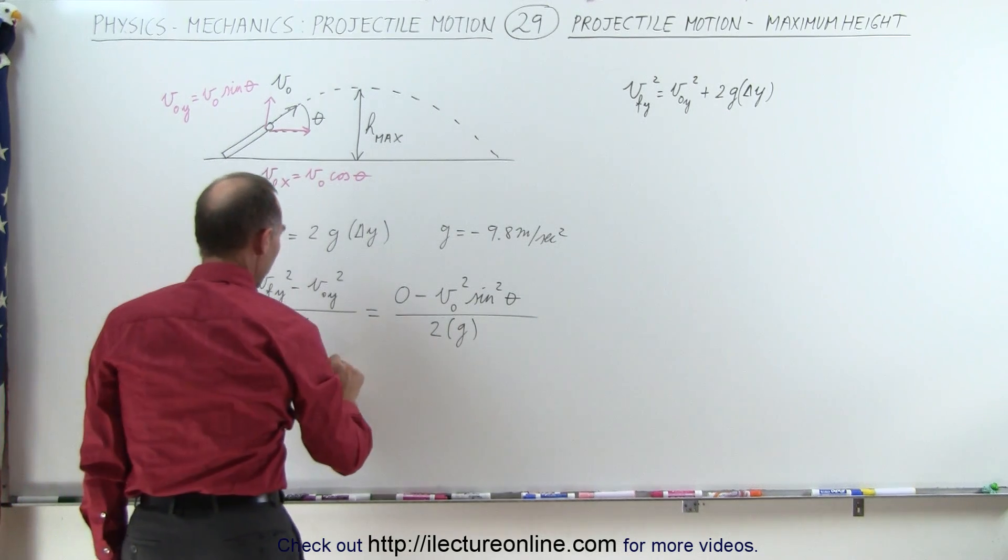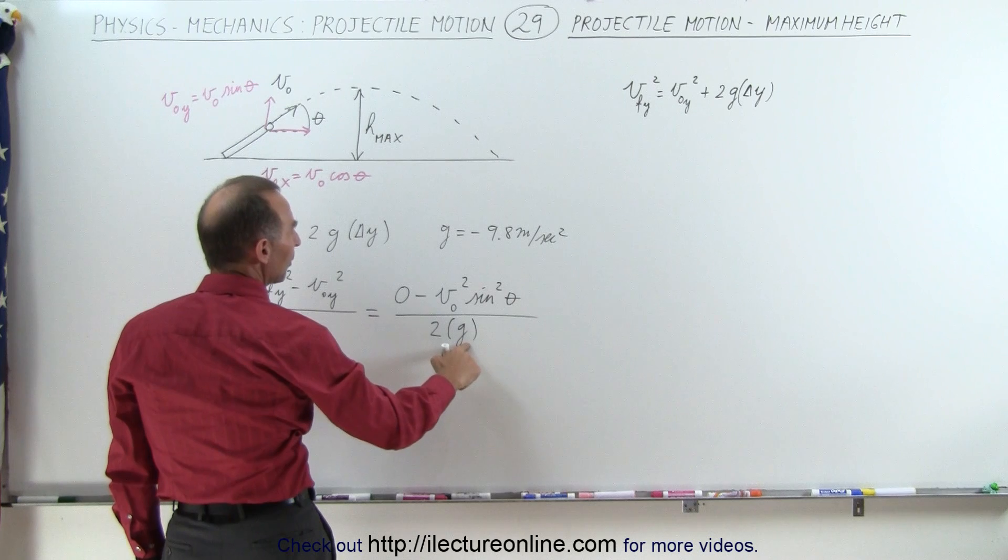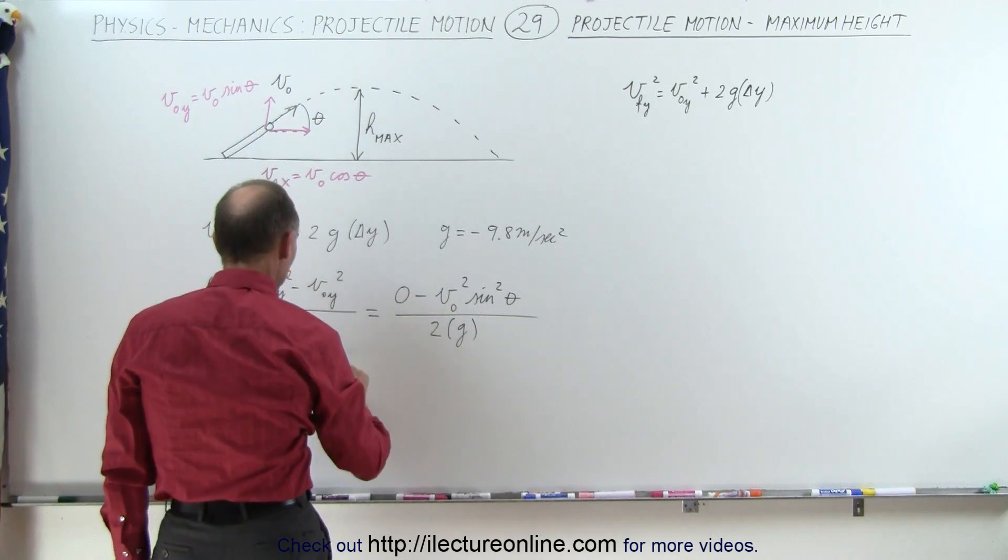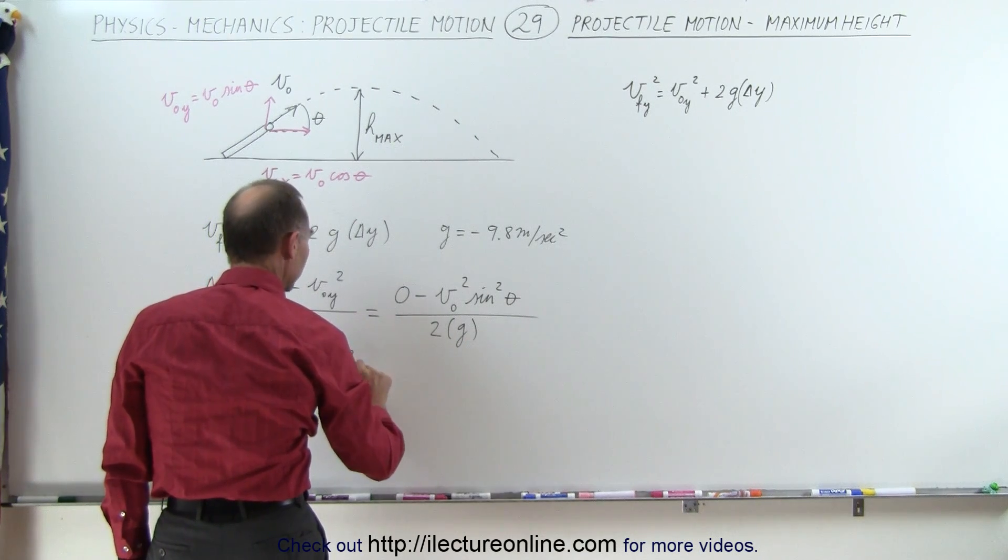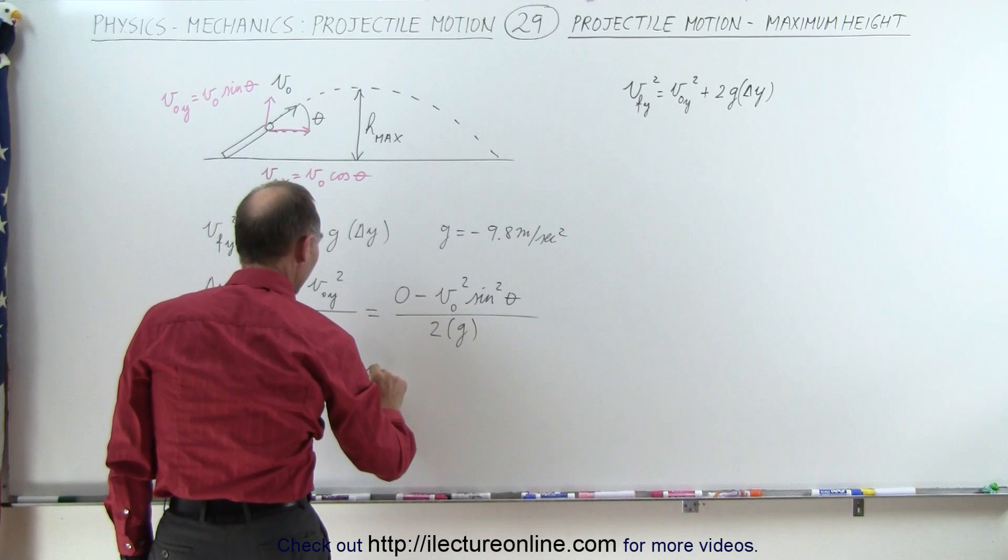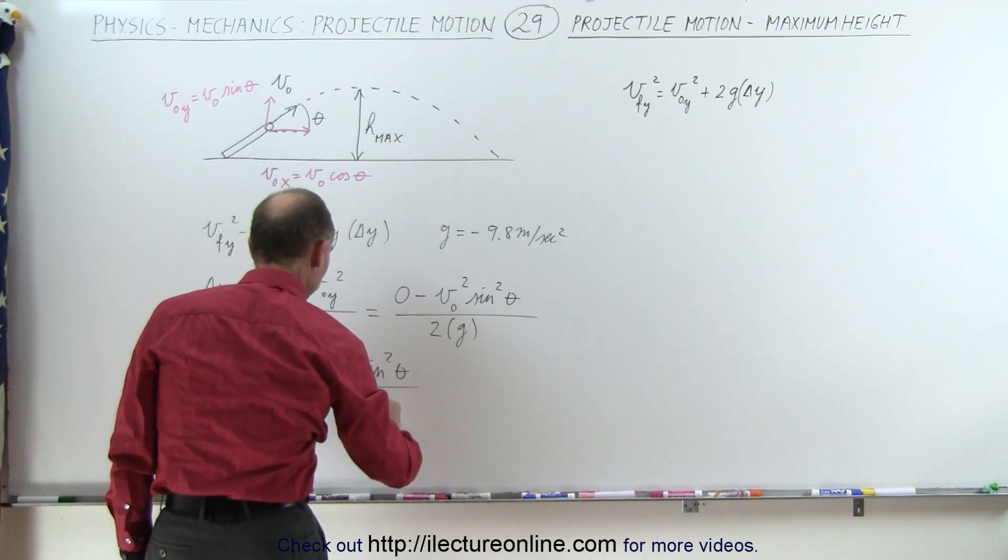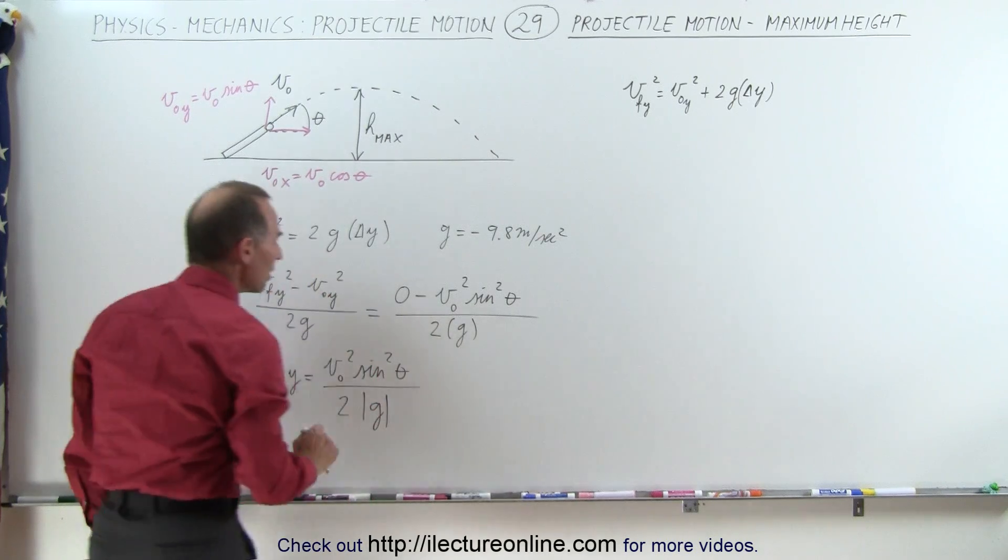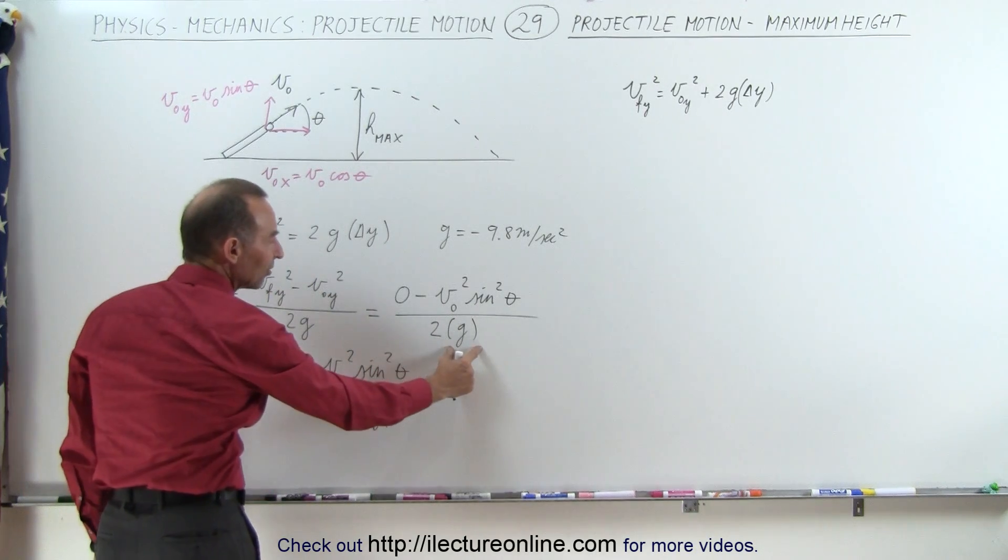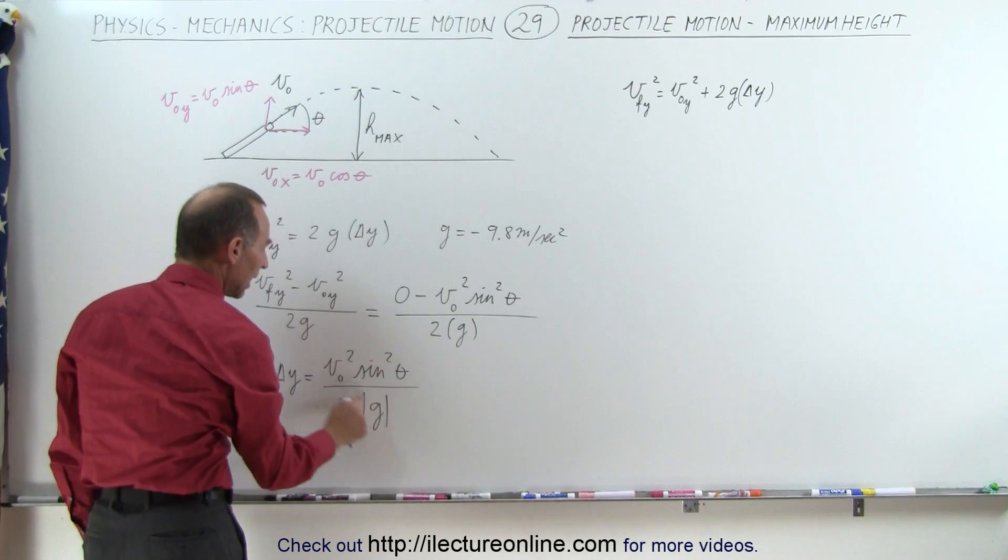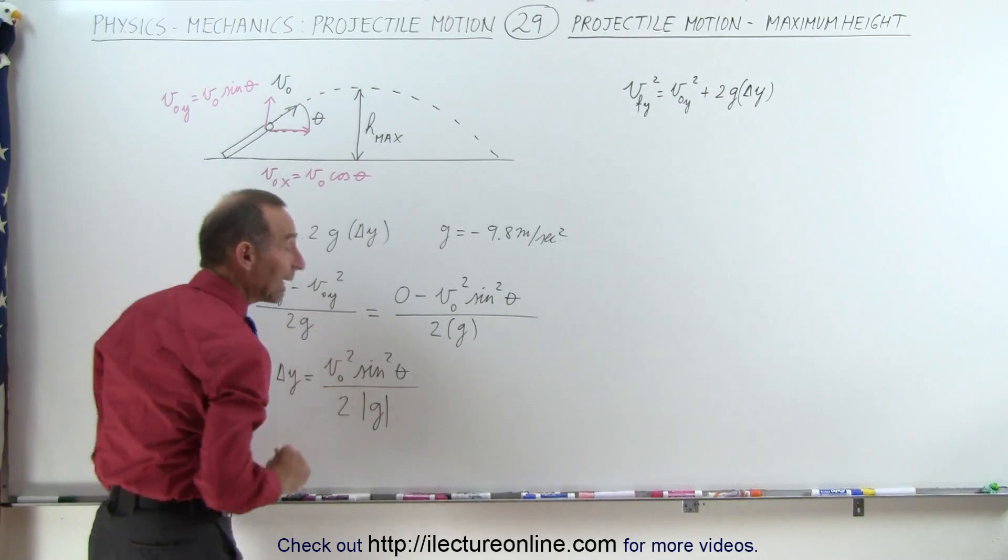Well, if I'm going to replace it by minus 9.8, I will get v initial squared, times the sine squared of theta, divided by 2 times the absolute value of g. So, I'm making the minus 9.8 into a positive 9.8, and then, of course, can also cancel the negative in the numerator.